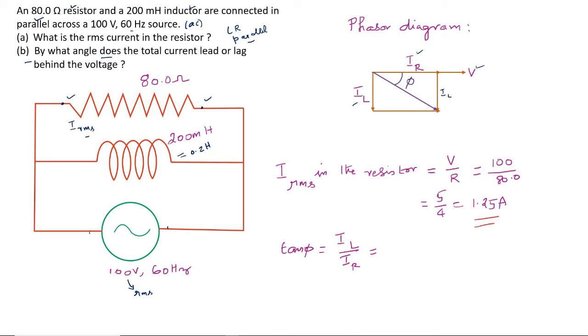But IL is V by XL, IR is V by R. Therefore, tan phi is R by XL. Substitute the values of R and XL. Why we have written 0.2 into 120 pi? XL is nothing but L omega. L is 0.2. Omega is 2 pi f. Omega equals 2 pi f. 2 pi f is how much? As given here, 60. So, 2 pi into 60. So, 120 pi for omega. That's why we have written like that.